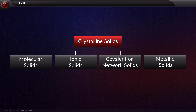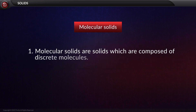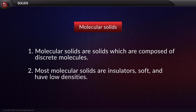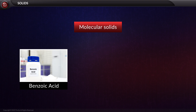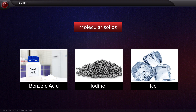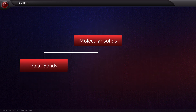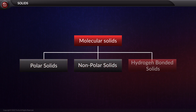The first type is molecular solids. Molecular solids are composed of discrete molecules. Most molecular solids are insulators, soft, and have low densities. For example, benzoic acid, iodine, ice, etc. These three examples belong to three different categories of molecular solids: polar solids, nonpolar solids, and hydrogen bonded solids.